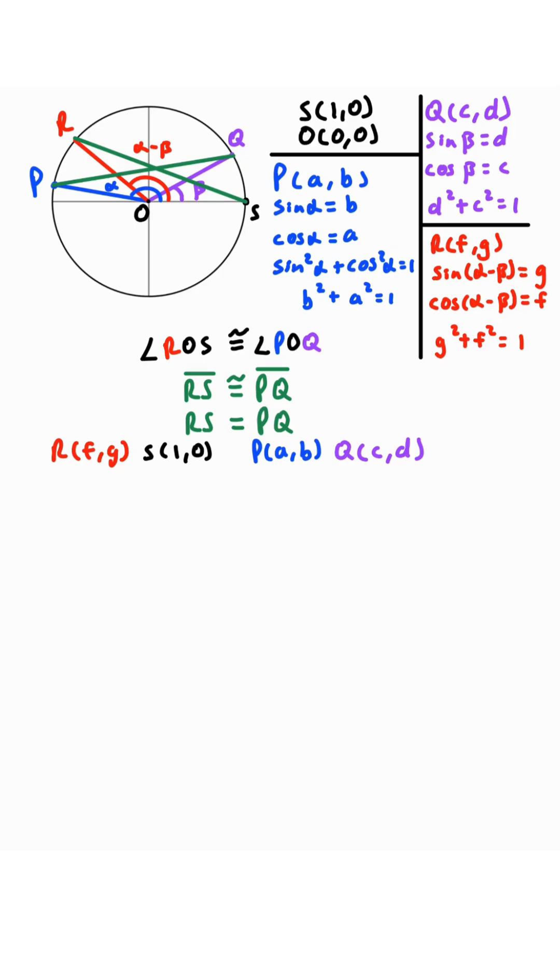Now, the distance from R and S, we're going to use the distance formula. It will be the square root of the difference of the x value squared plus the difference of the y value squared. And the distance from P to Q is going to be the square root of the difference of the x value squared plus the difference of the y value squared.